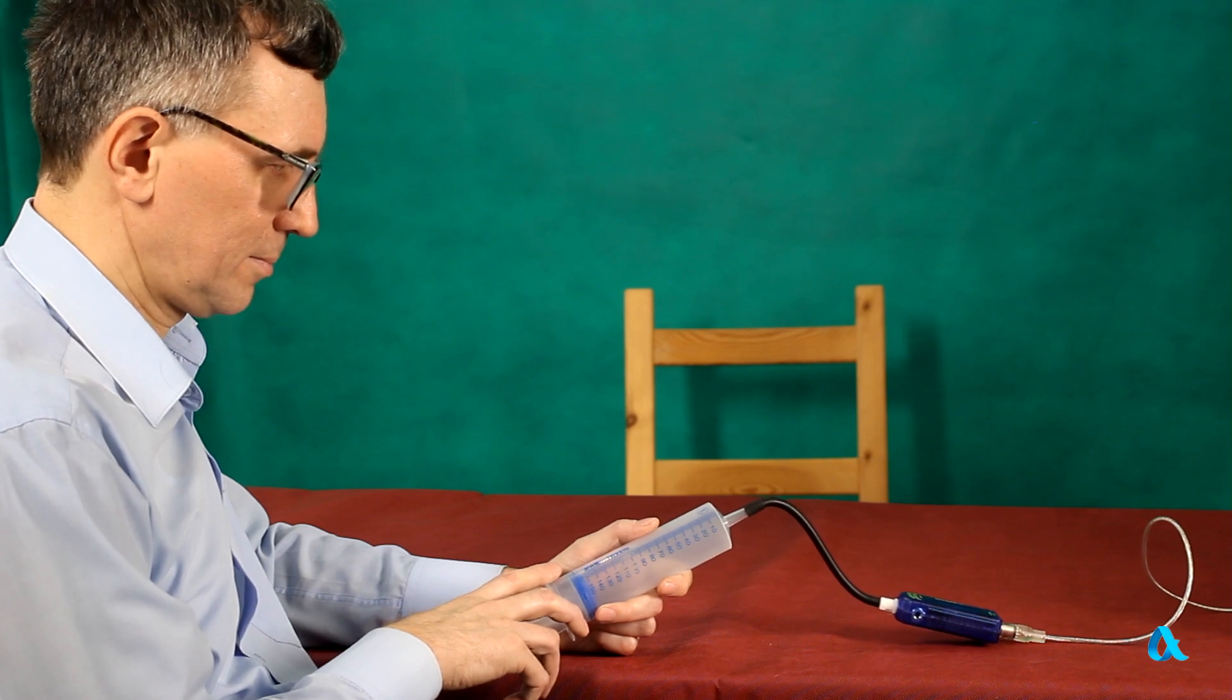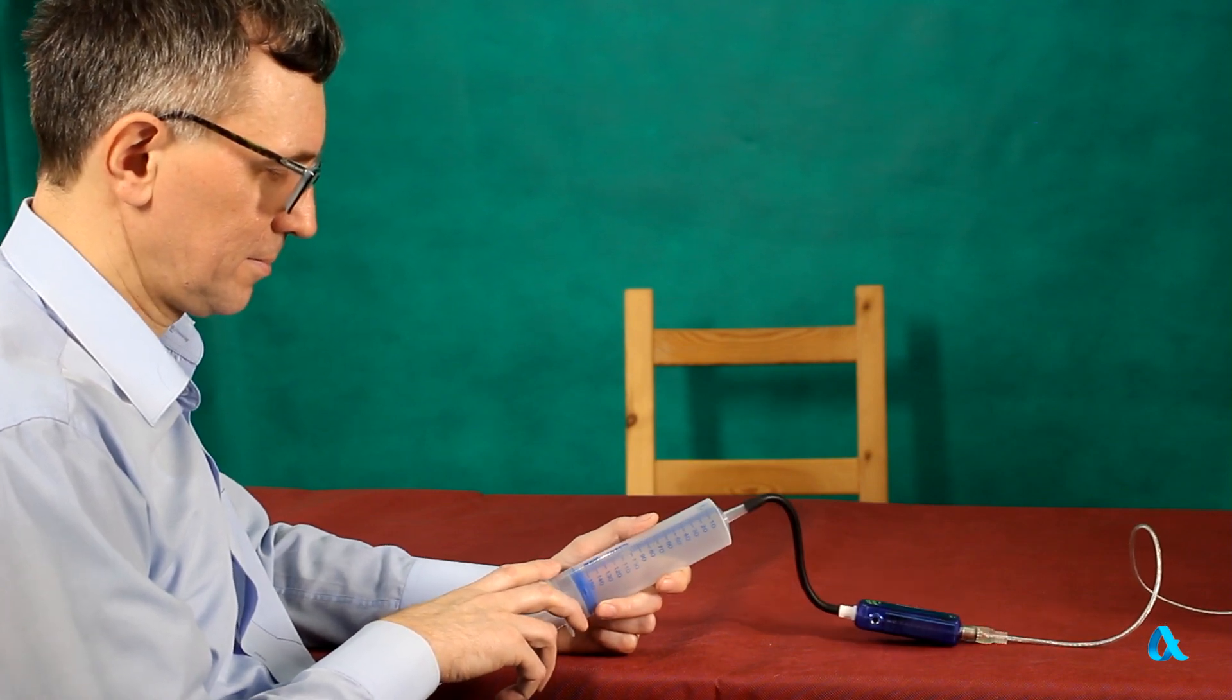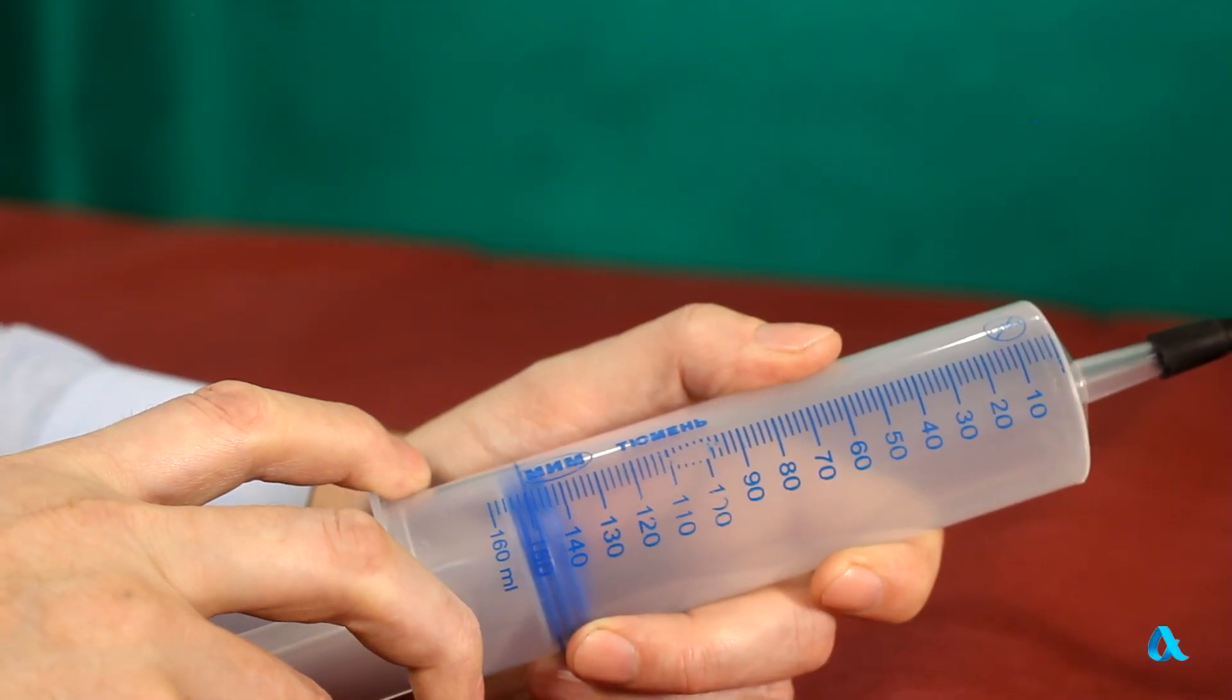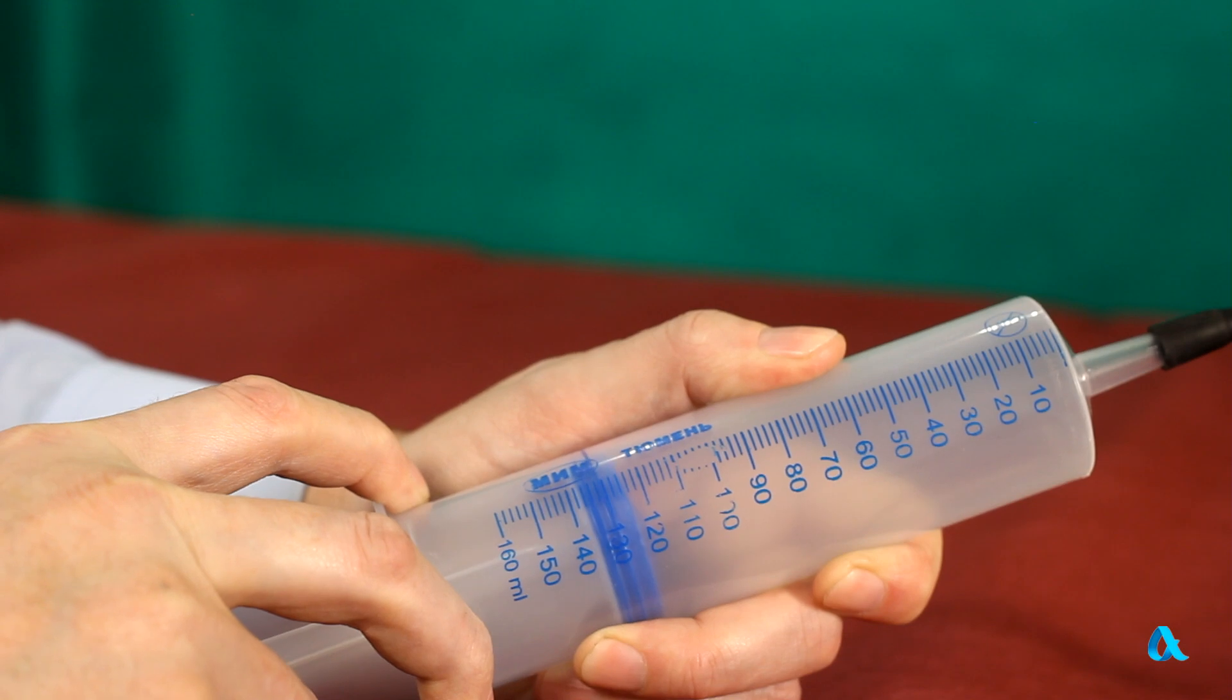We connect a large syringe to a pressure gauge and slowly compress the air inside the syringe, decreasing the volume by 10 ml at a time, and examine the pressure rising.